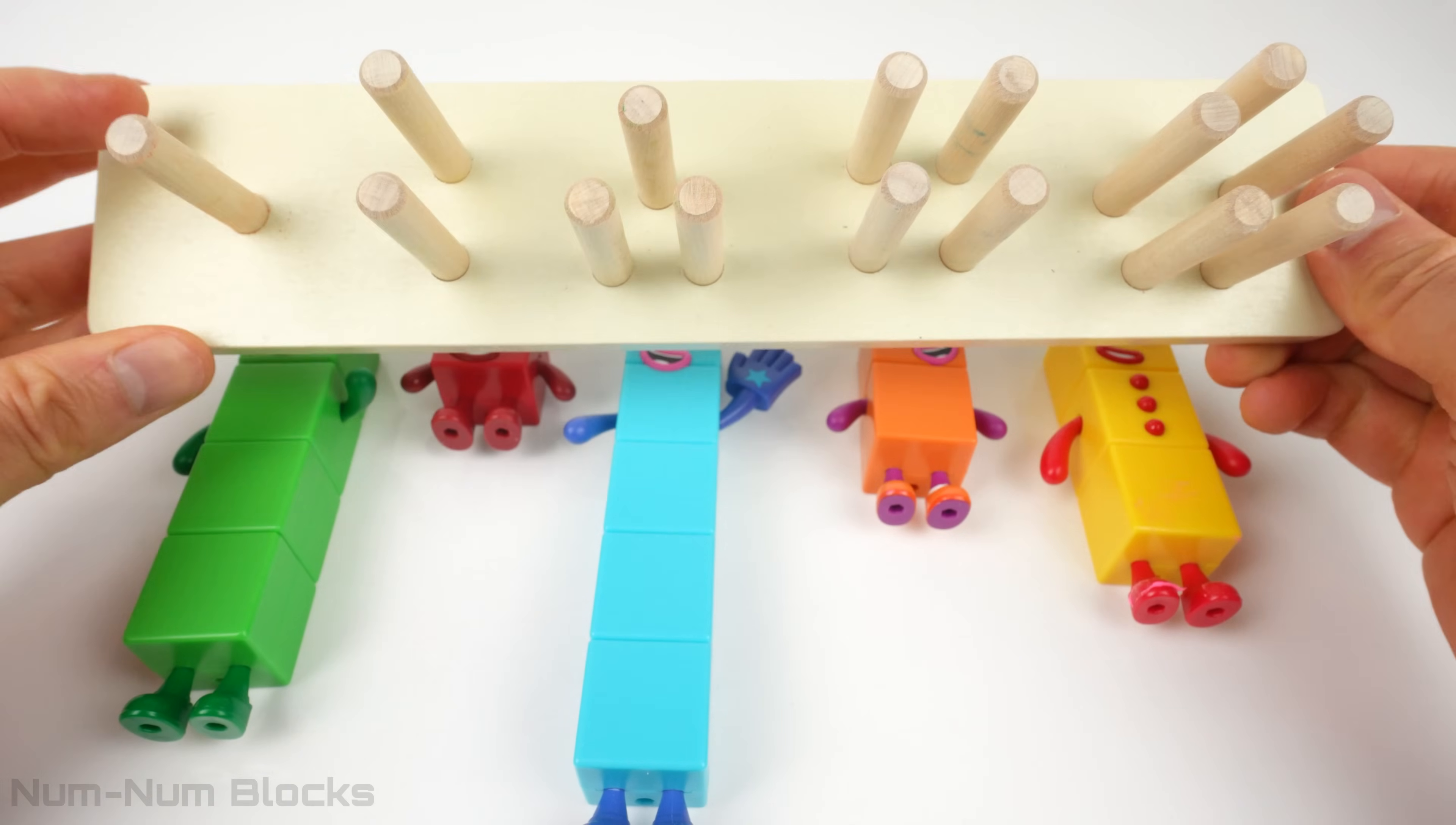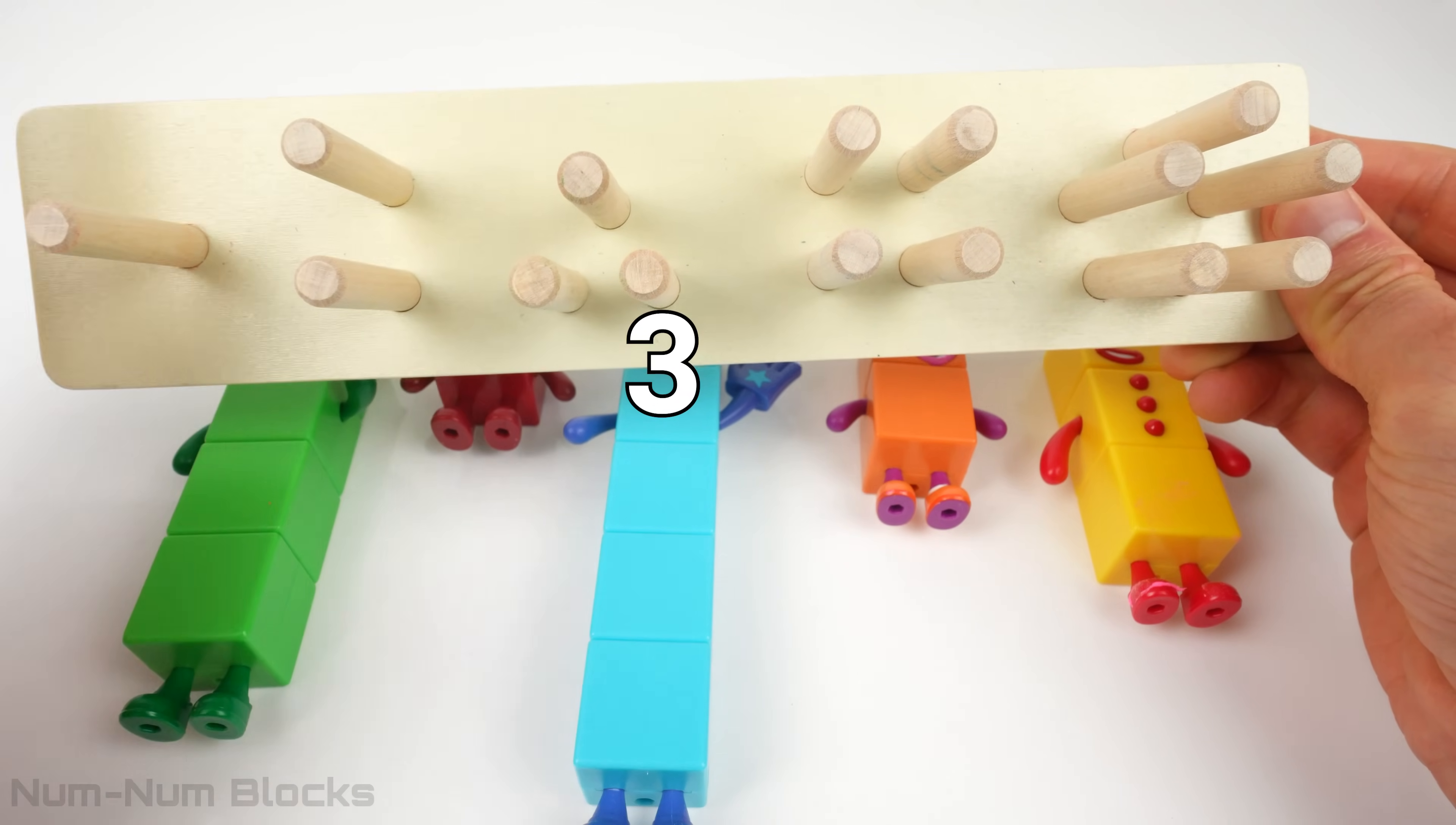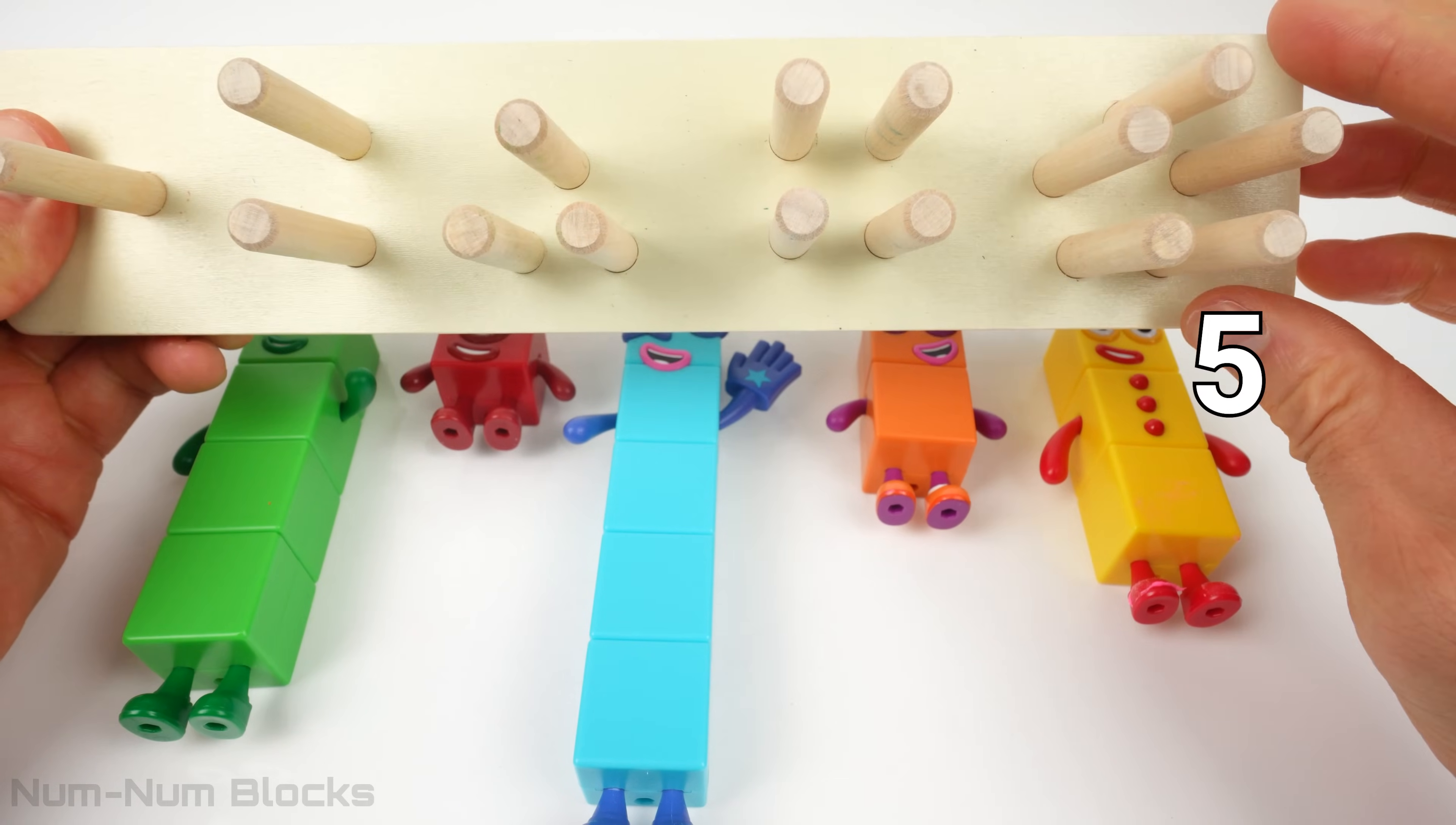This one has one peg. This group has two pegs. There are three pegs in the middle group. This one has four pegs. The last group has five pegs.